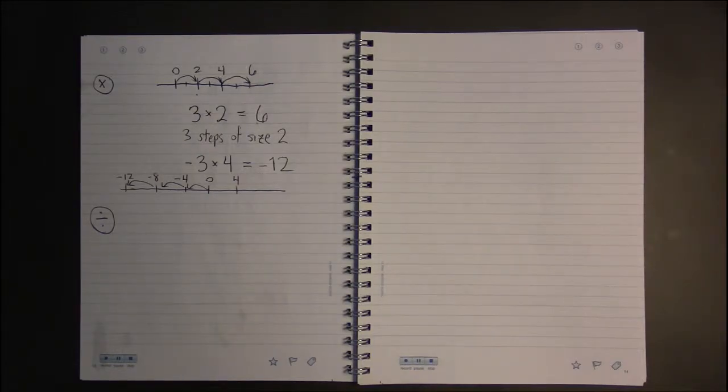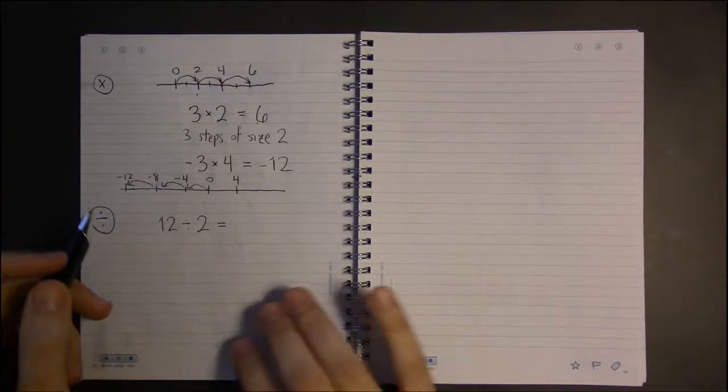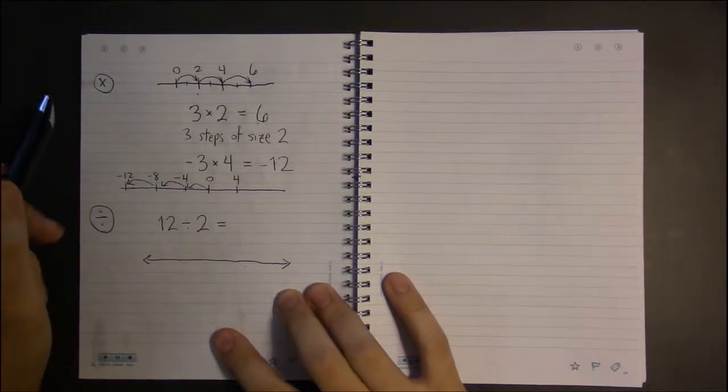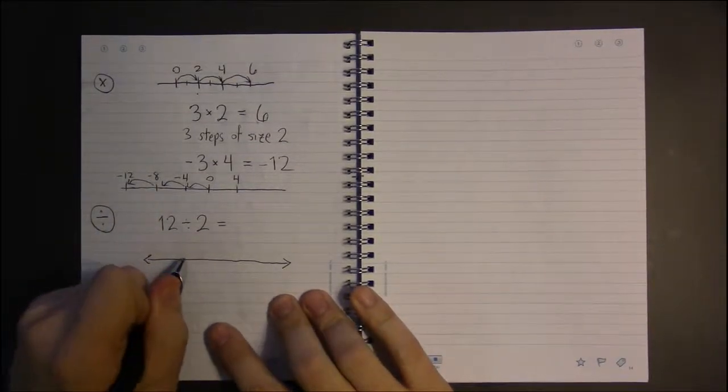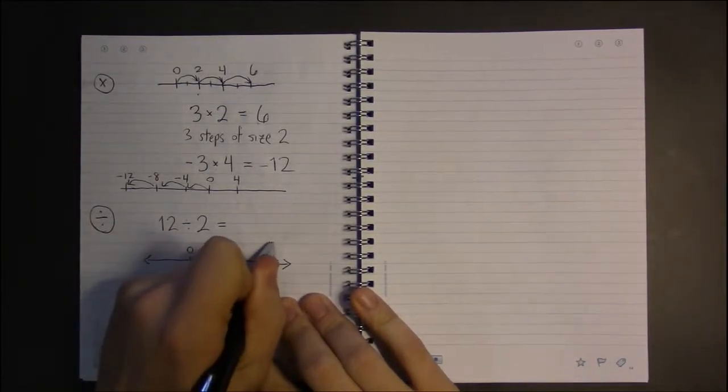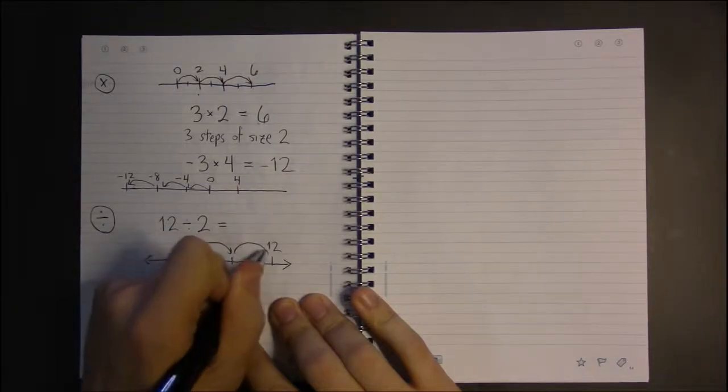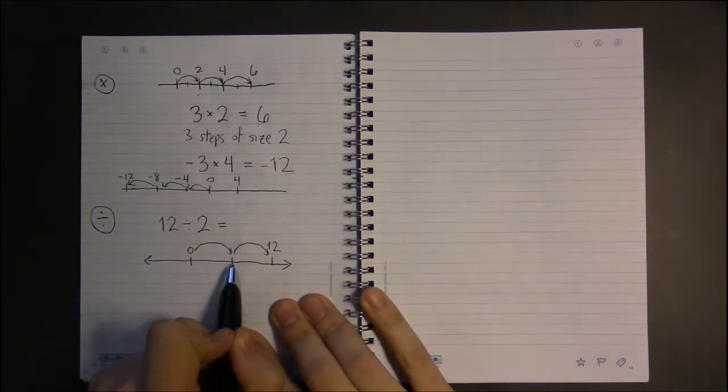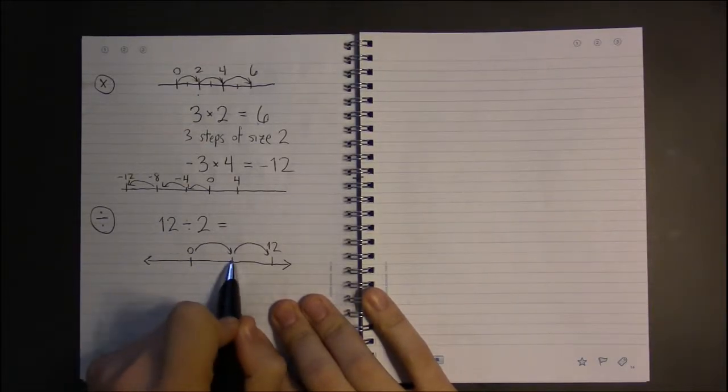Division. 12 divided by 2. If you noticed, subtraction was kind of a twist on addition. And division will be a twist on multiplication. It's saying, if we start at 0, and we land on 12 in 2 steps, what size step did we take? Well, from 0 to something, and then from that something to 12. And these are equal lengths. So, the only thing this could be is 6. We had to go from 0 to 6, and then go another 6 steps, this distance again, to hit 12.